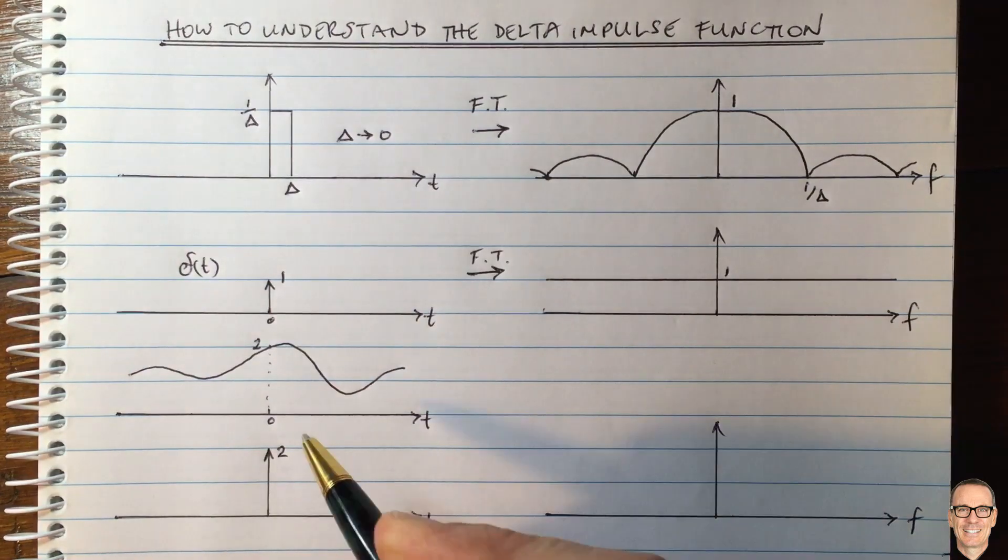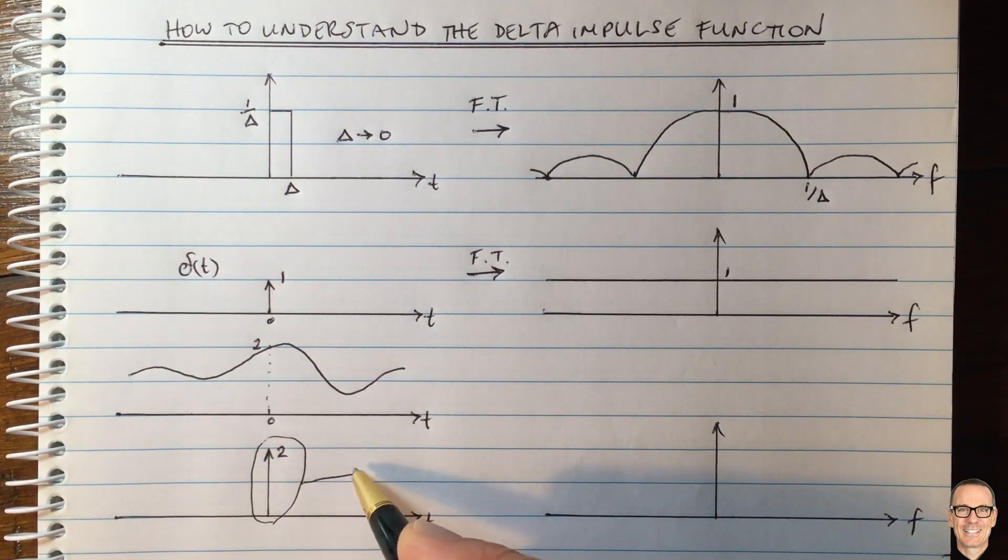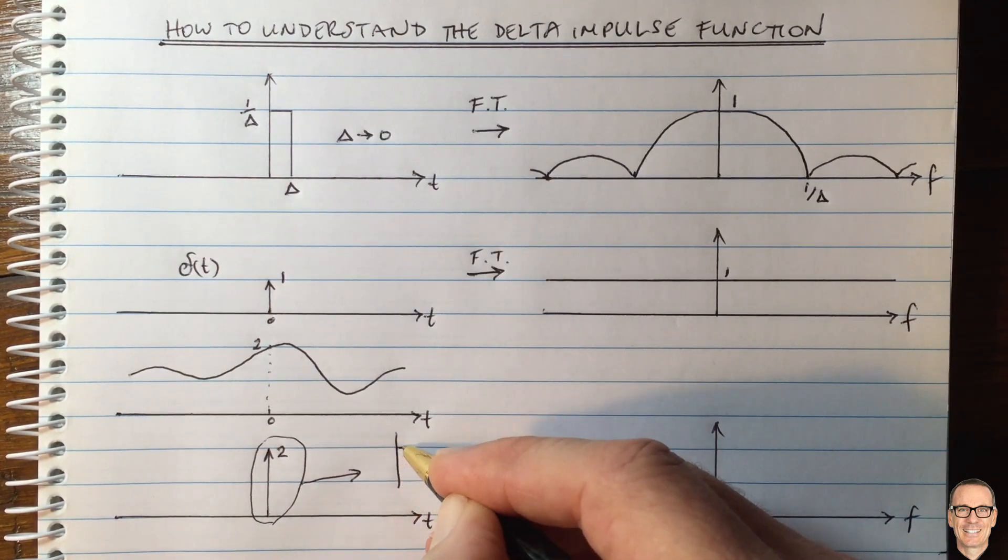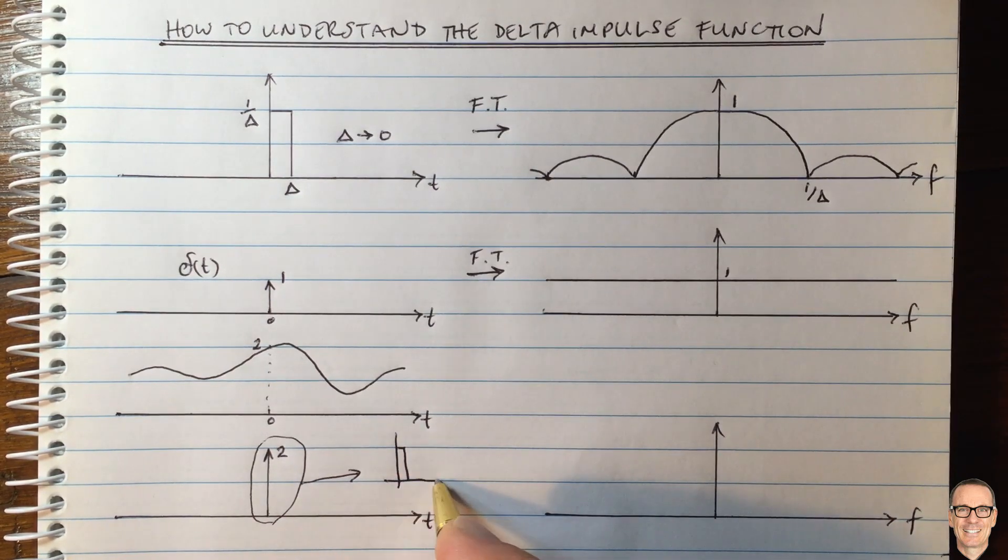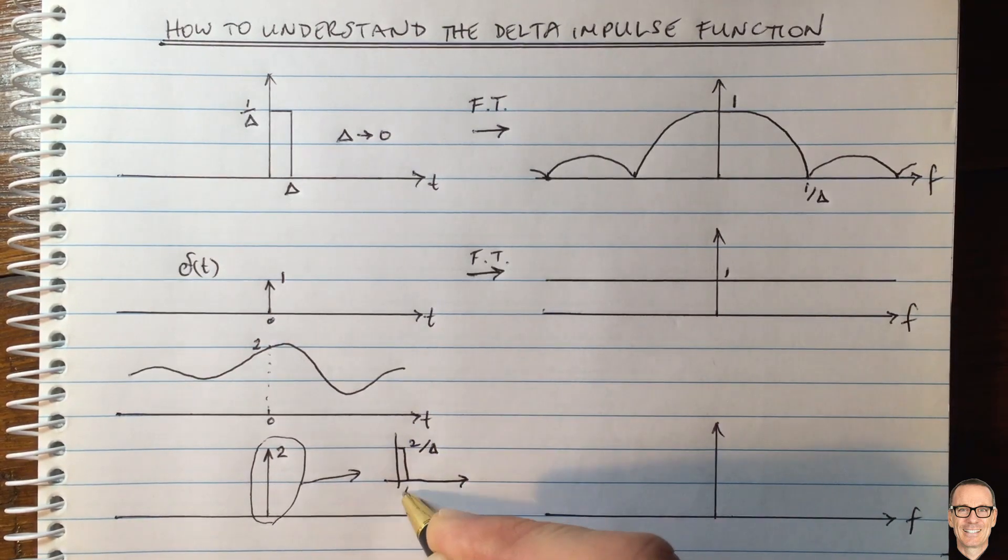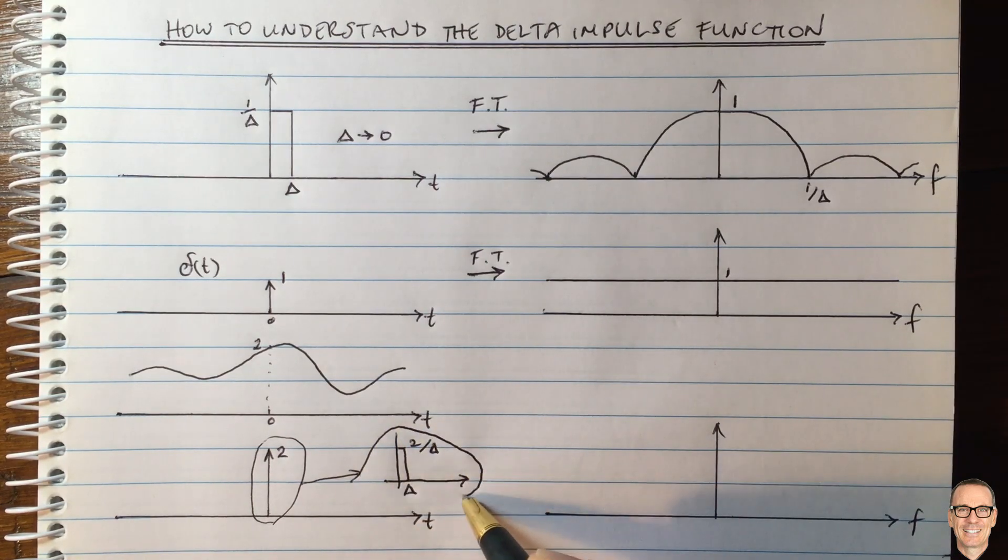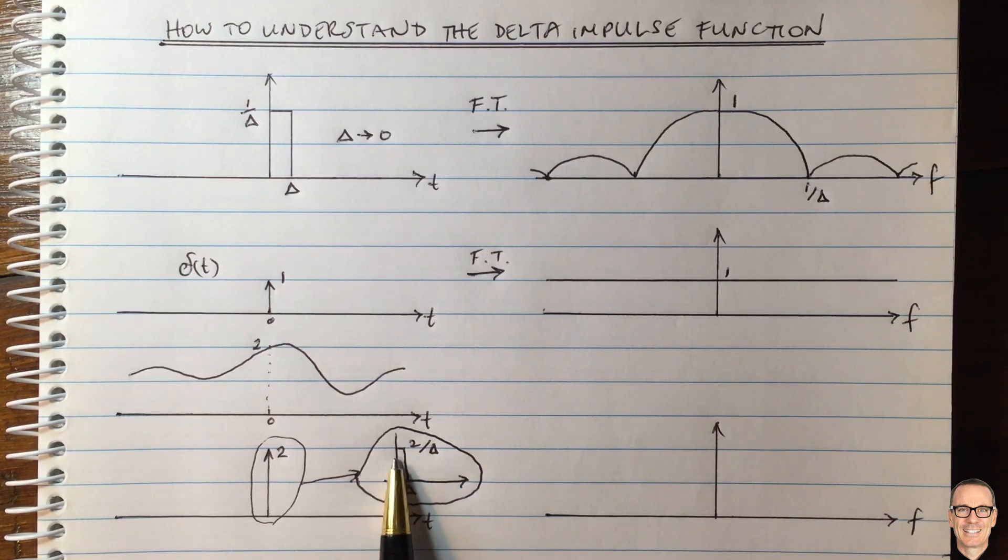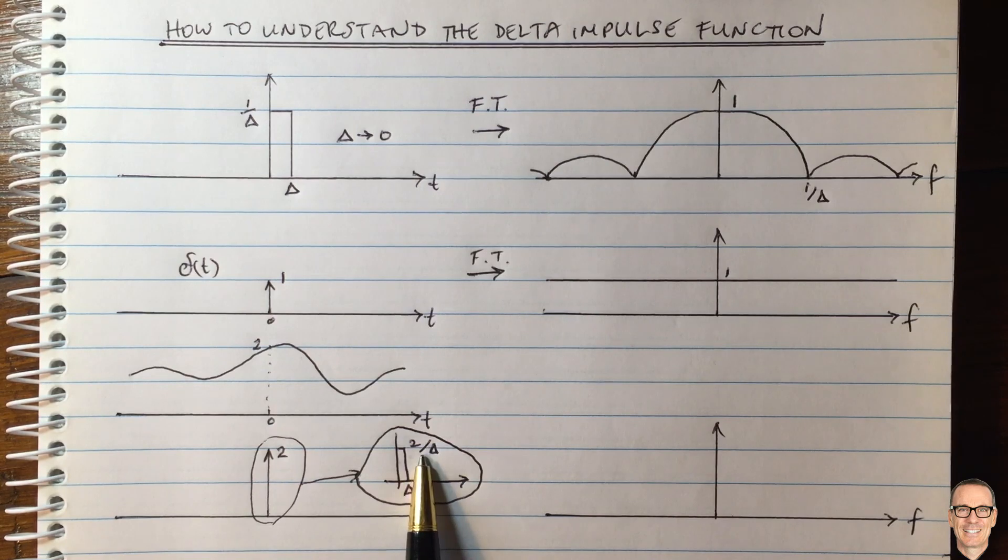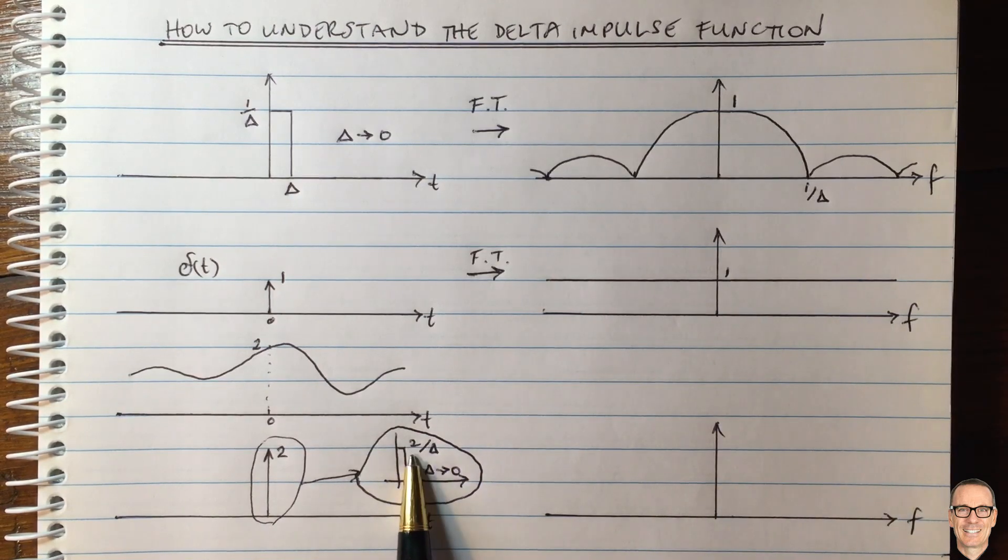If I zoom in on this here and draw a zoomed-in version, we're looking at a rect function which now has a height of 2 divided by delta and a width of delta. That's all that's going on. That's why we write a 2. You're just putting a 2 divided by that. It's still going to have infinite height when delta goes to 0, still have infinite energy.